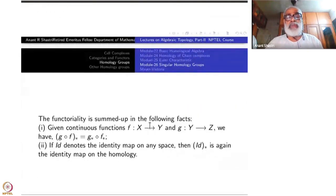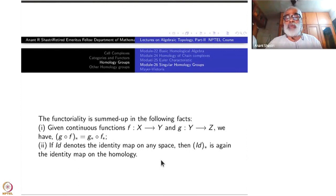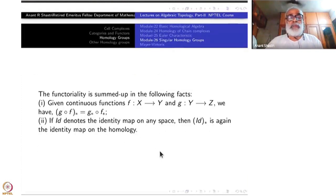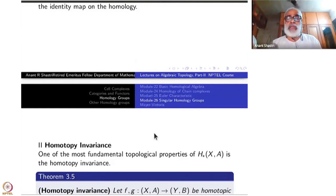The functoriality is summed up as follows. If f: X → Y and g: Y → Z, then (g∘f)* = g* ∘ f*. If the identity denotes the identity map of space X to X, then identity-star from H*(X) to H*(X) is also the identity map on the homology groups. These two facts are what you need to understand — homology is a functorial association.